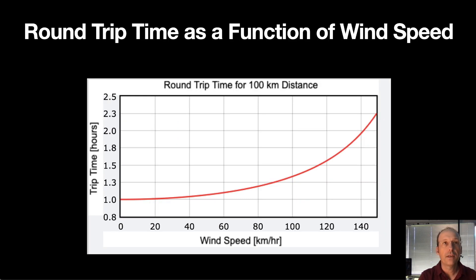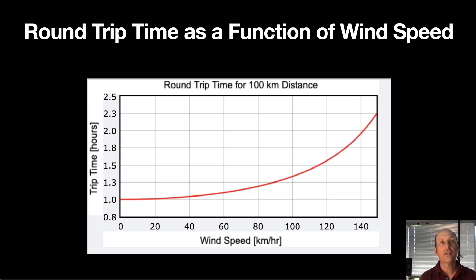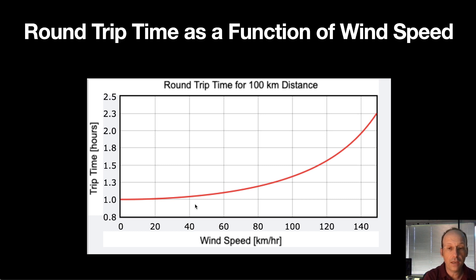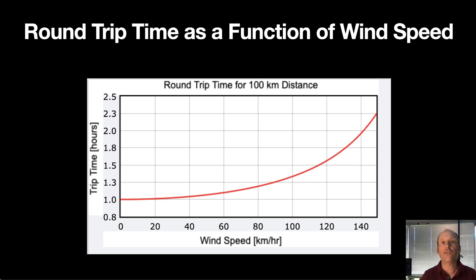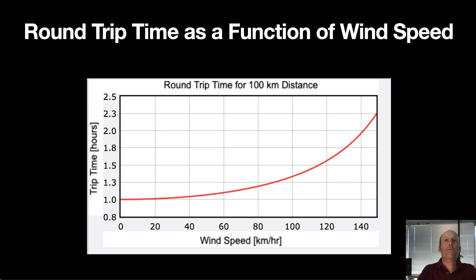One more graph: this shows that the time approaches infinity as the wind speed increases. This is the total trip time as a function of wind speed. At zero wind speed it takes an hour. As you increase the wind speed it increases, and if you plot it up to 200 km/h it goes to infinity — confirming that at zero ground speed you'd never make it.